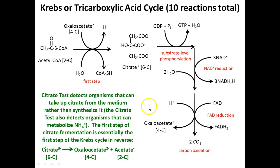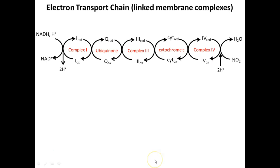Our citrate test detects organisms that can take up citrate from the media — not whether they can do the citric acid cycle, but whether they can actually take that particular sugar source from the media. In that process, they also use the only nitrogen source in that media. They produce a basic product — ammonia — and that's actually what causes the color change. We're not seeing if they can do the Krebs cycle; we're seeing if they can take citrate in and use it as a carbon source.